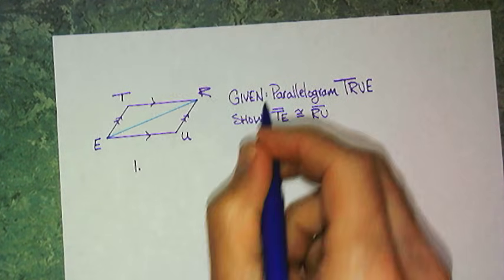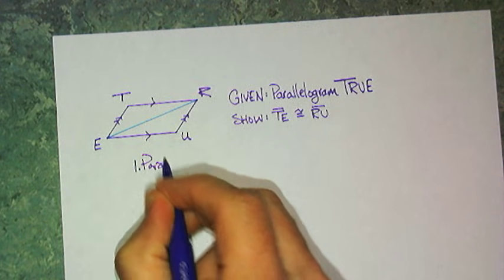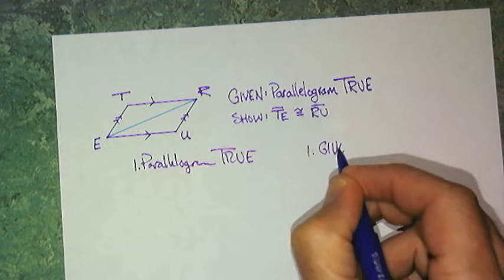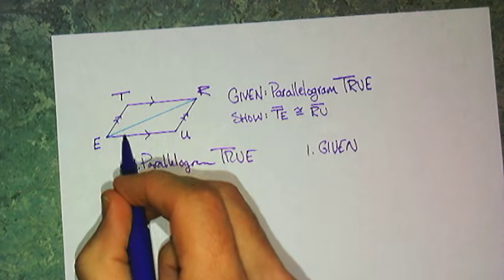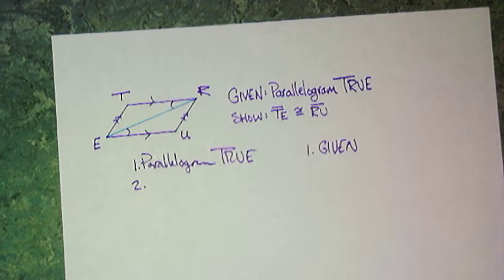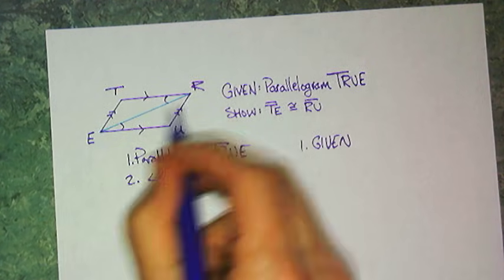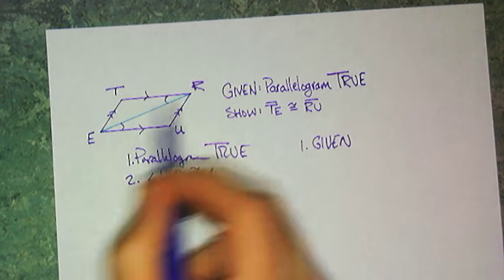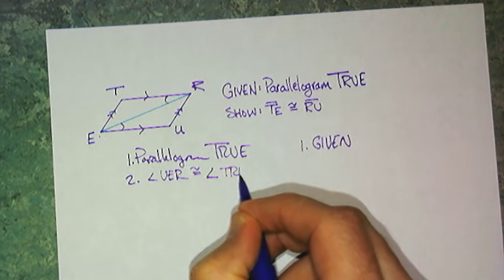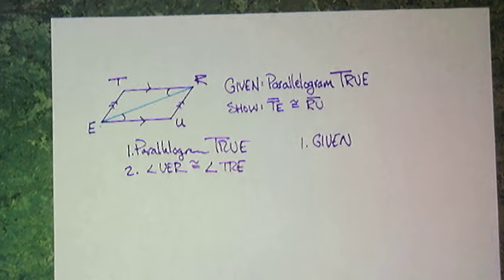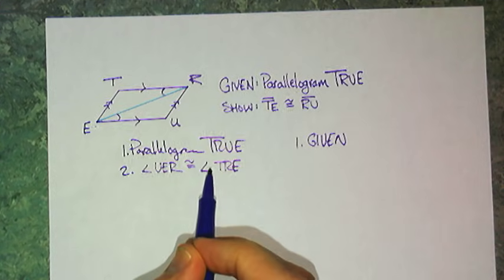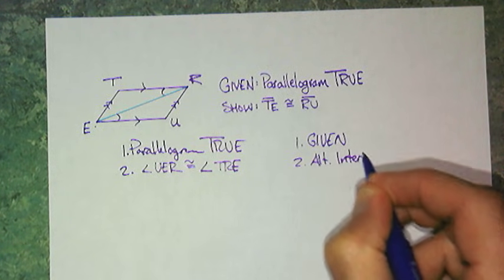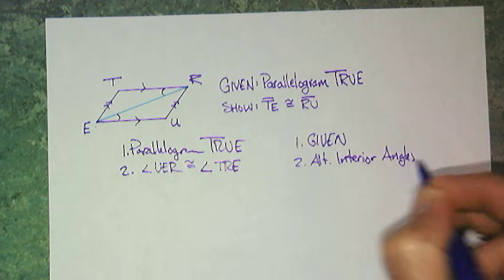So, let's start. First off, we'll do a two-column proof. Our given is parallelogram true. We know that's given. We know that there's an angle right here and an angle right here that must be congruent. And I'm going to say that angle UER must be congruent to angle TRE. And this is because these lines are parallel. And we call that alternate interior angles or AIA for short.